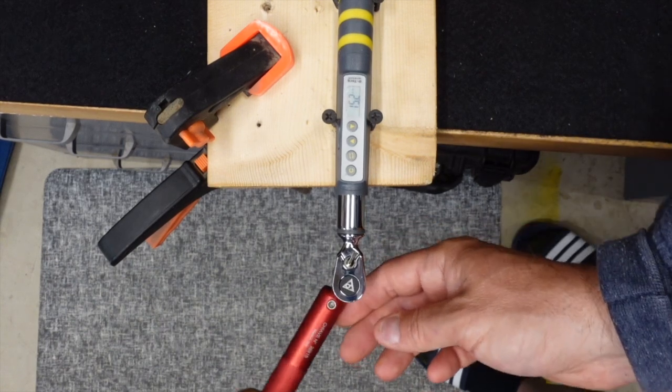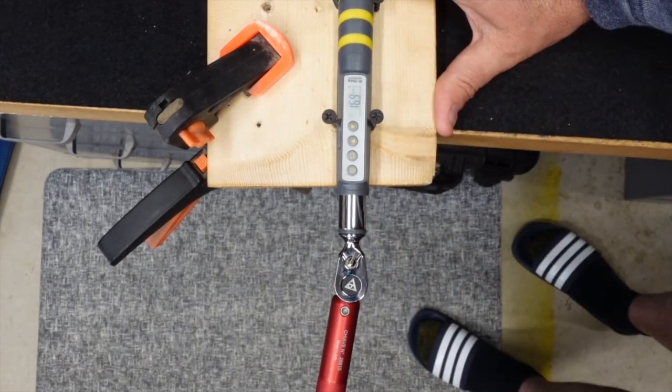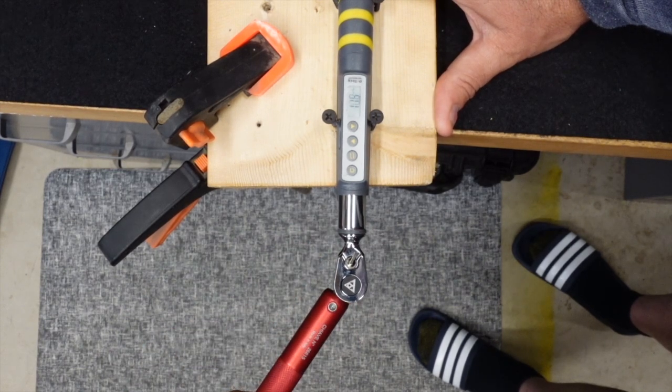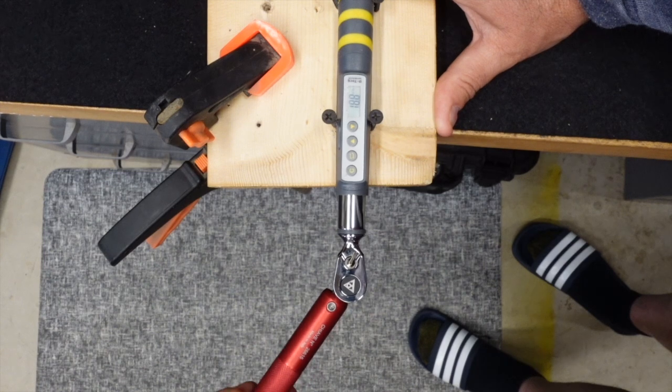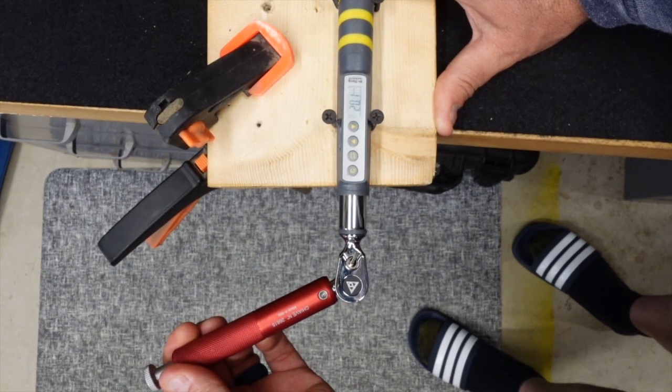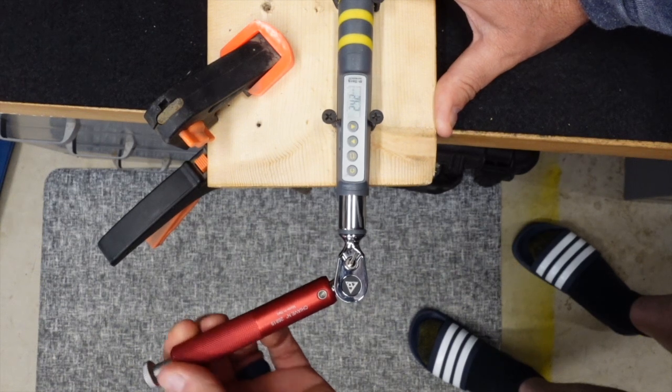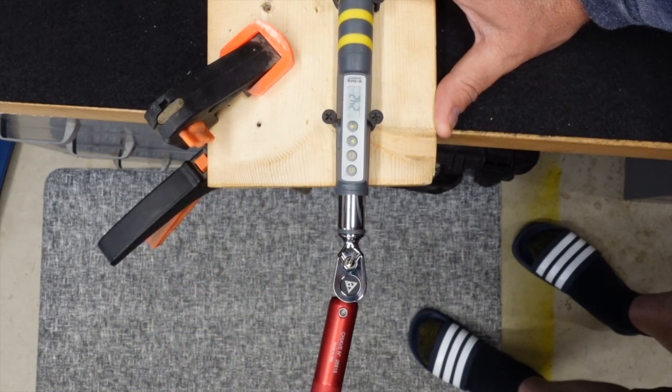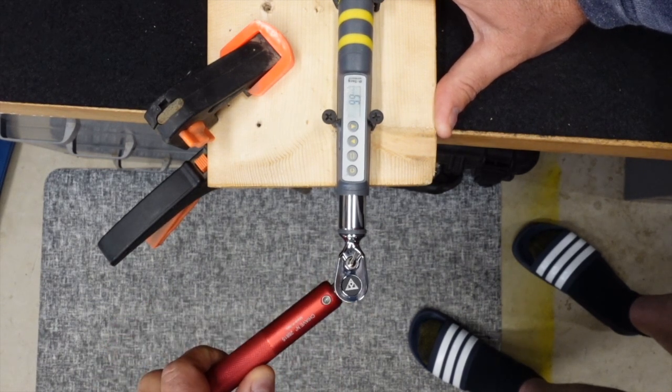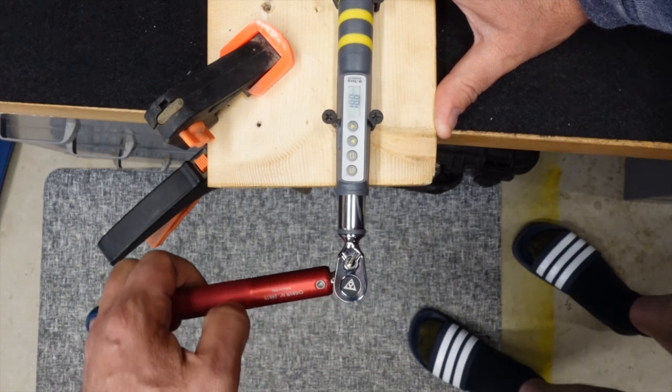Let's just see here: 15.2, 18.1, 18.8. That one, in all fairness, I wasn't pulling very consistently. 19.1, 18.8.